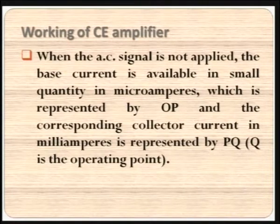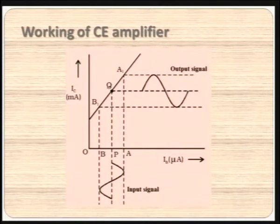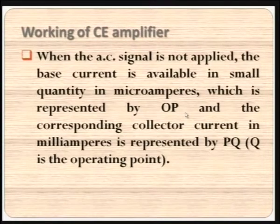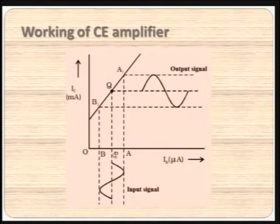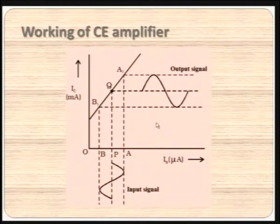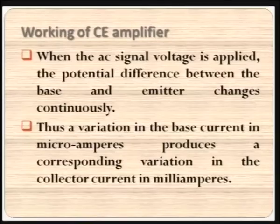When the AC signal is not applied, the base current is available in small quantity in microamperes, represented by the OP section — that is the DC already available. The corresponding collector current in milliamperes is represented by PQ, where Q is the operating point. OP is the input; PQ is the output for the transistor when no signal is given. When the signal is given, it will vary with respect to the already existing DC condition.